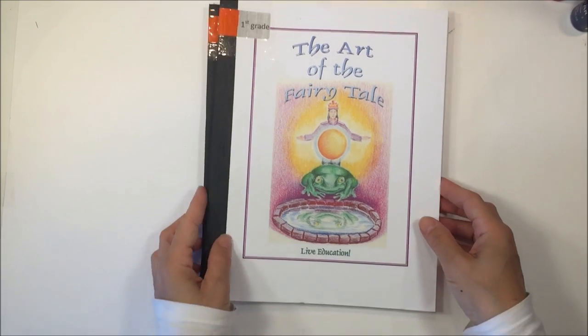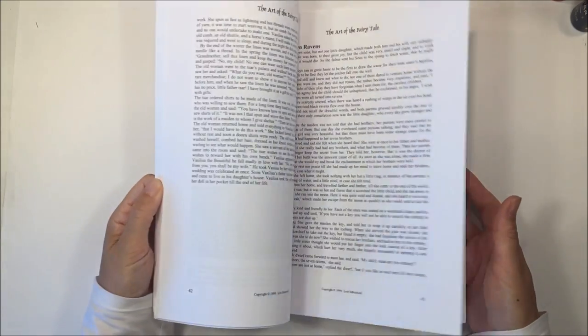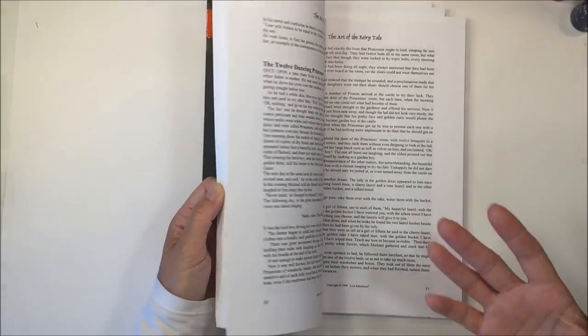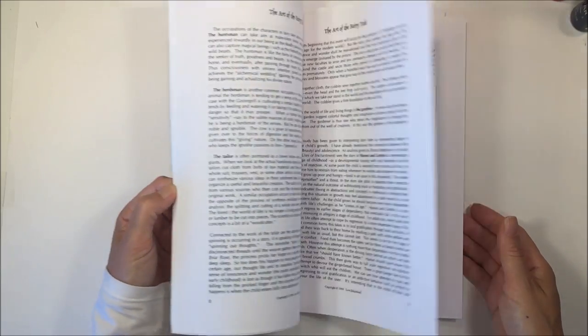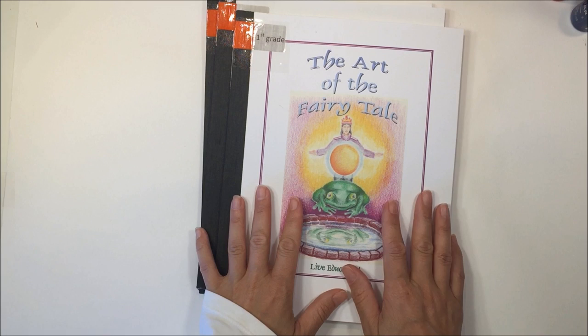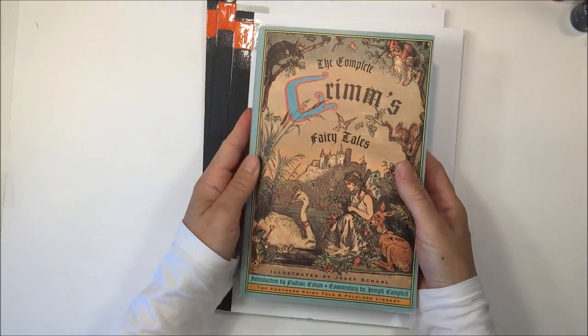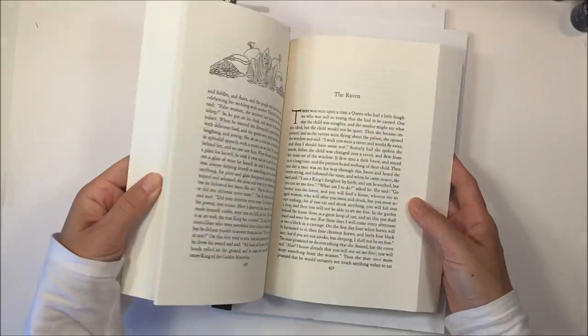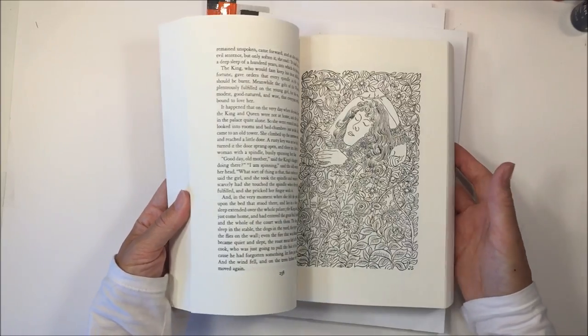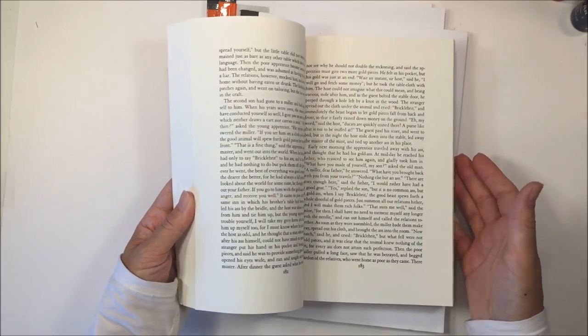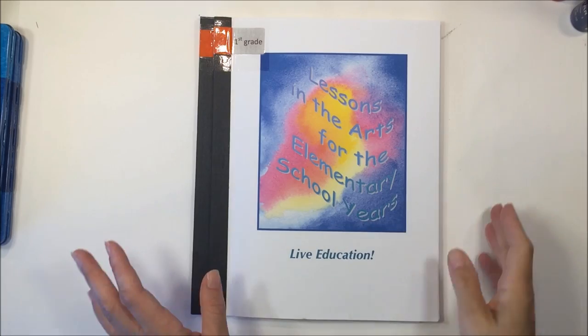The next book is The Art of the Fairy Tale. Even in first grade and actually throughout the entire curriculum in elementary school, there's a lot about story. It's story driven and the fairy tales play a big part in grade one because they're used in order to introduce the letters of the alphabet. This curriculum comes with the fairy tales for first grade. But if you wanted to, you could always pick up your own complete Grimm's fairy tales. I just advise that you read the fairy tales before you read them to your child because some of them can be a little bit horrific and graphic.